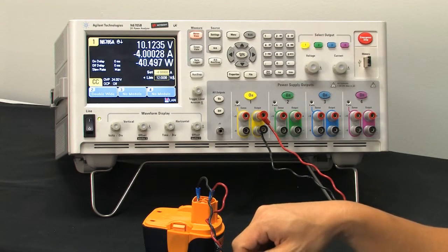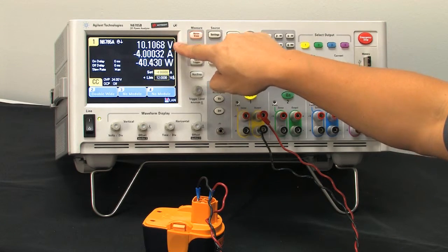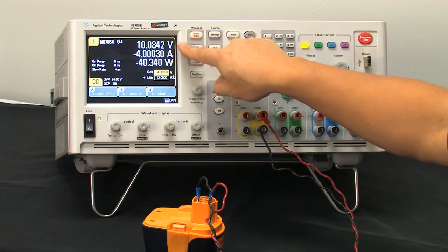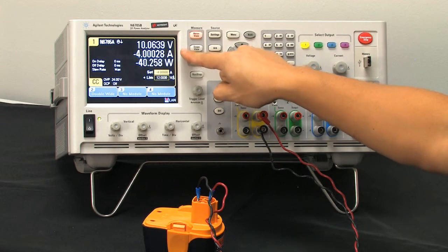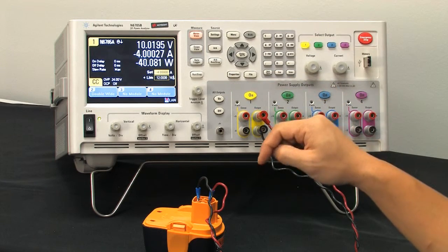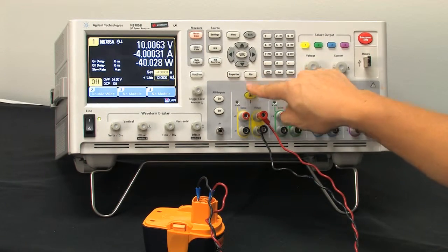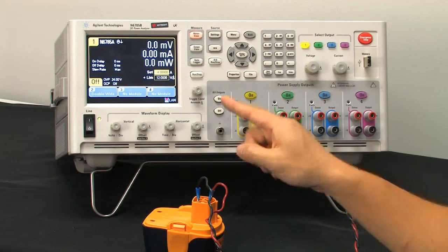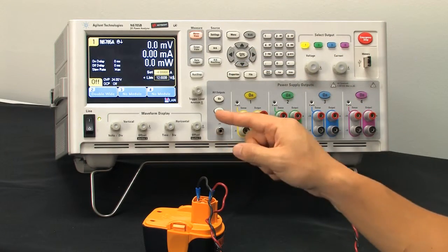So once we do that, you'll notice that the value up here, the voltage value, is dropping much faster than before. And when we punch in a higher and higher current value, you'll see it discharge faster and faster. So that's a really simple discharge function.